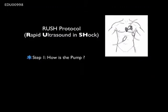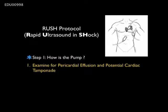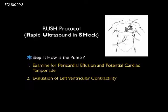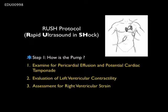Step one, evaluation of the pump, encompasses three main elements. The first is to examine the heart for the presence of a pericardial effusion, and if a pericardial effusion is seen, to further evaluate the heart for potential cardiac tamponade requiring a pericardiocentesis. Step two is to evaluate the left ventricle for contractility. Part three is assessment of the heart for right ventricular strain, which in the right clinical context may signify a massive pulmonary embolus as the etiology for hypotension.